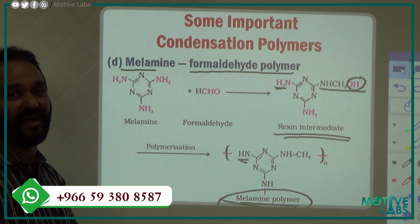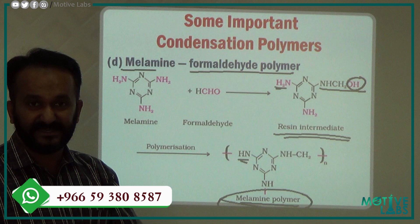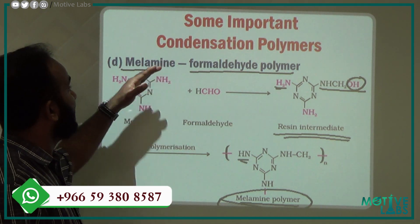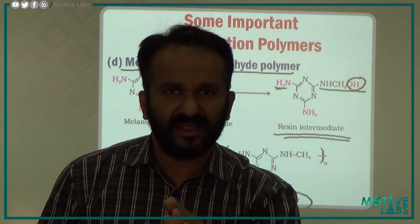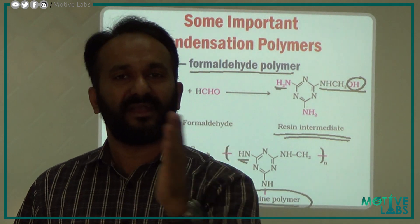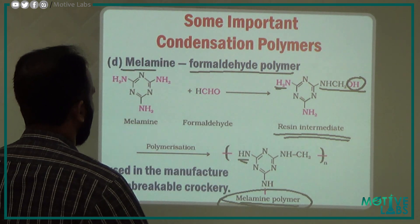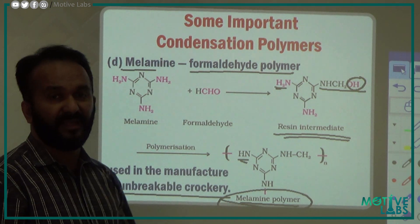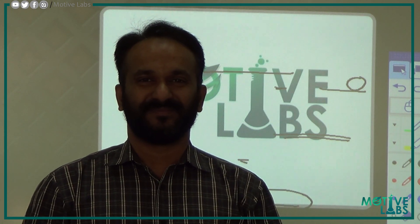So the four categories of condensation polymers are: polyamide (Nylons), polyester (Dacron/Terylene), phenol-formaldehyde resin (Bakelite), and melamine-formaldehyde polymer. Melamine formaldehyde polymer is usually used in the manufacturing of unbreakable crockery items.